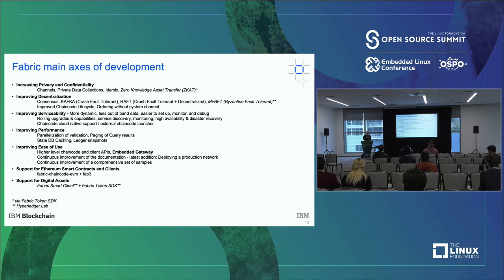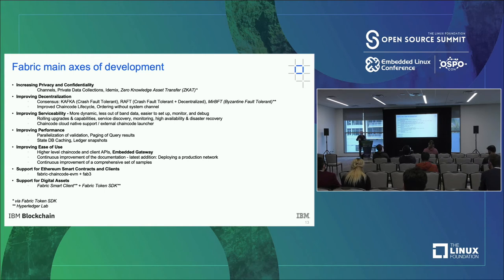Serviceability is another aspect. At the very beginning with Fabric, if you wanted to change anything, you basically had to shut down the whole system, change some configuration, and restart. Obviously when you have a system in production, that's not acceptable. So we evolved to a system that is much more dynamic and much more serviceable overall.